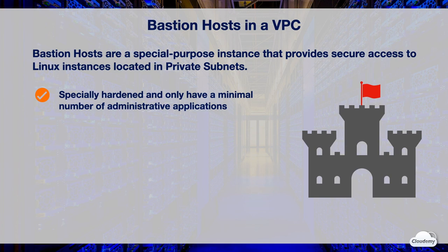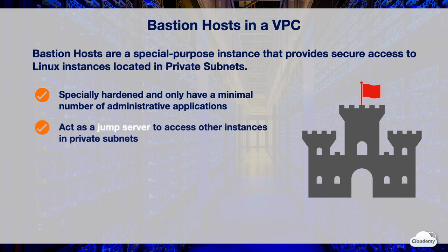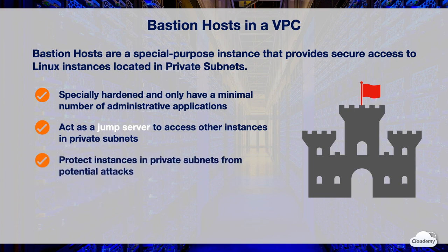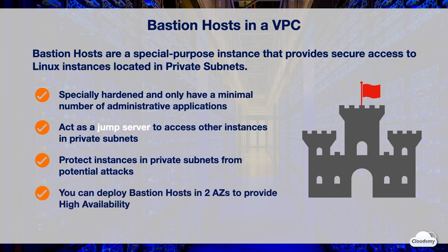Bastion hosts are typically placed in a segregated network. You can access the bastion host via SSH connections from a remote network, then use it as a jump server to access other instances in private subnets. Bastion hosts protect instances in private subnets and minimize the exposure to potential attack. You can deploy bastion hosts in two availability zones to provide high availability.